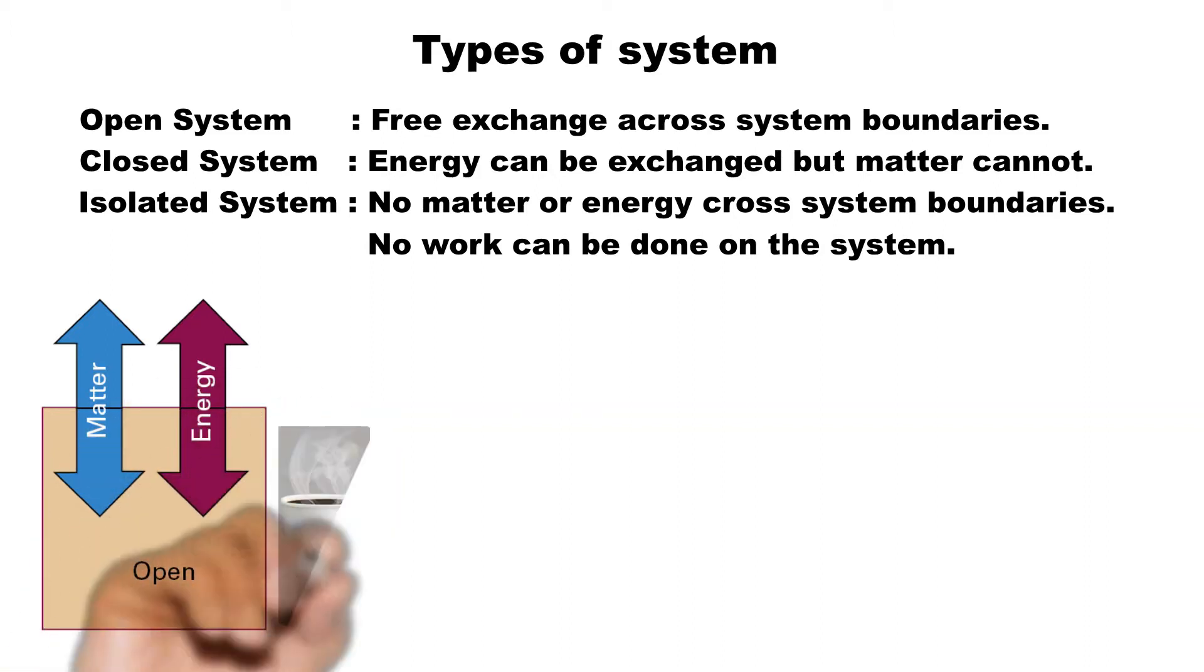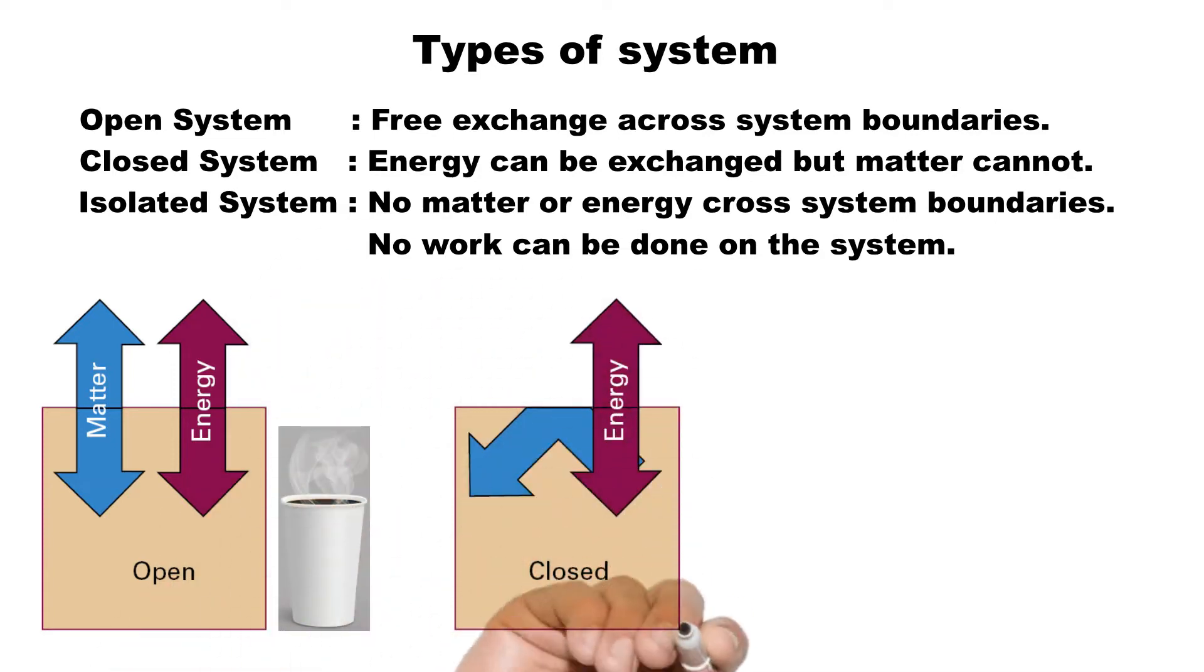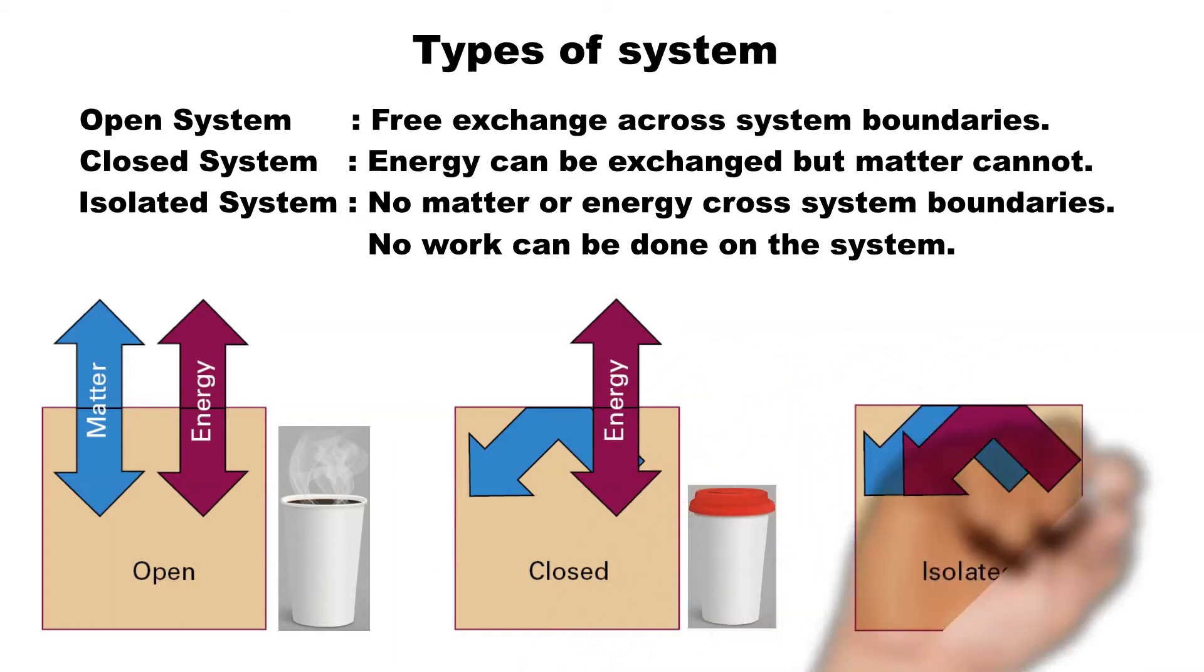A closed system can exchange energy but not matter with its surroundings. A cup of coffee with a lid on it is an example of a closed system. An isolated system can exchange neither matter nor energy with its surroundings. A thermo flask can be considered as an isolated system.